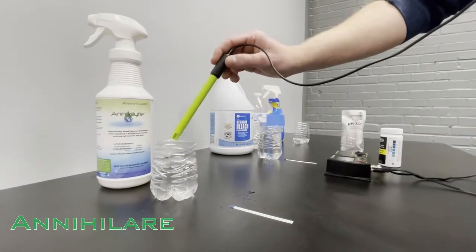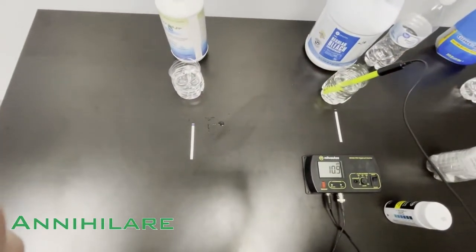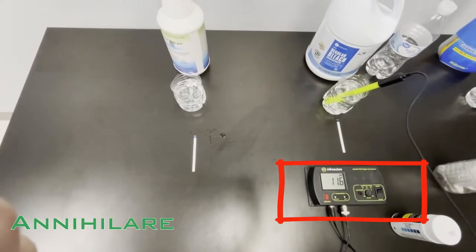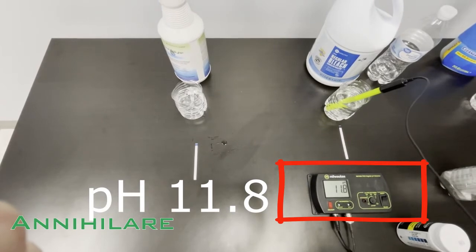Now let's move over to the sodium hypochlorite bleach solution. Watch how the pH just spikes through the roof and it's going to land a little bit south of pH 12.